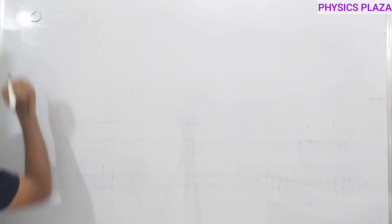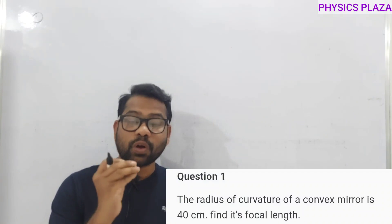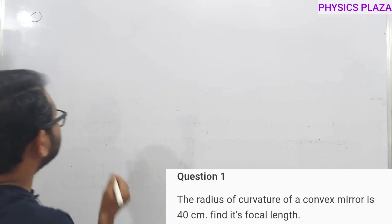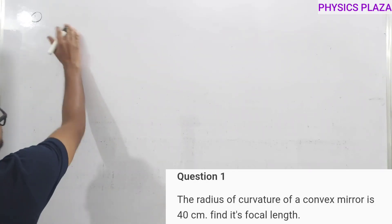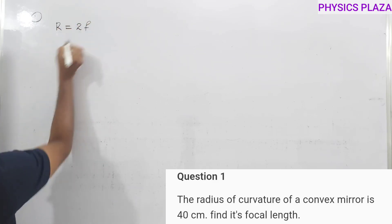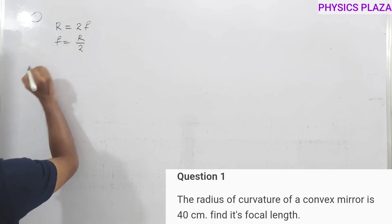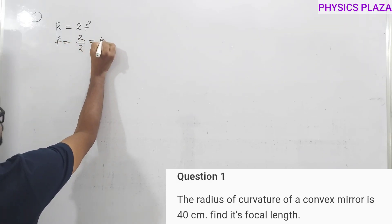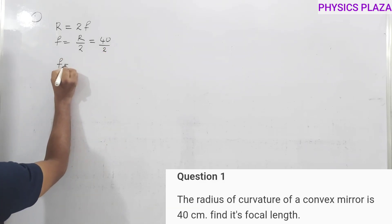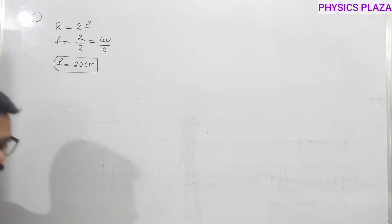First numerical: the radius of curvature of a convex mirror is 40 centimeters. We need to calculate the focal length. Using f = R/2, the radius of curvature is 40 cm, so focal length = 40/2 = 20 centimeters. That is the answer.